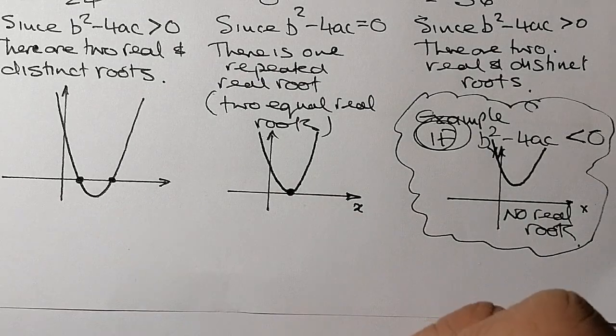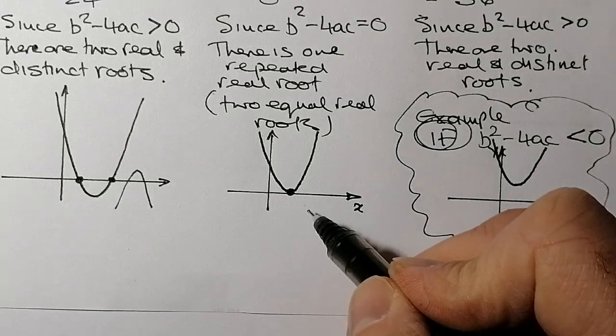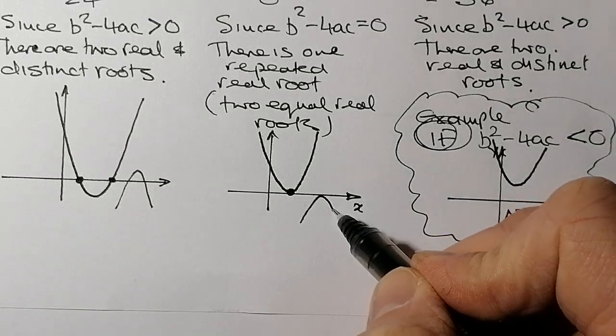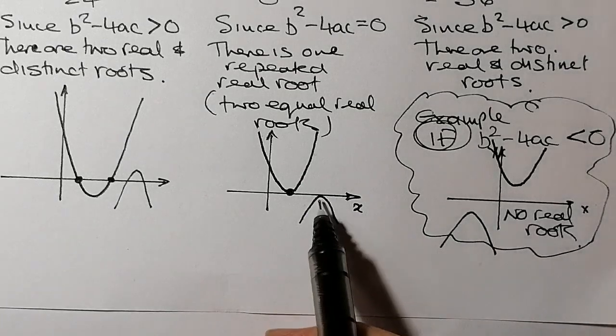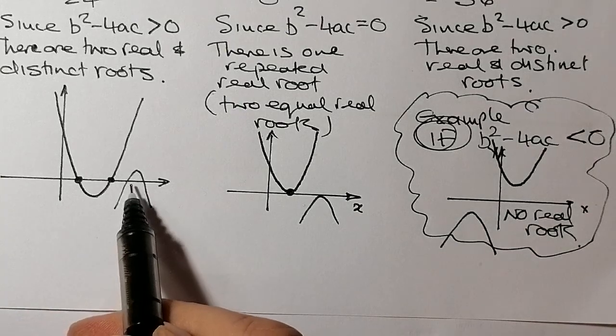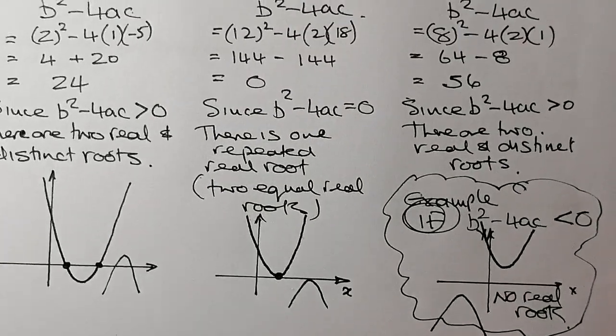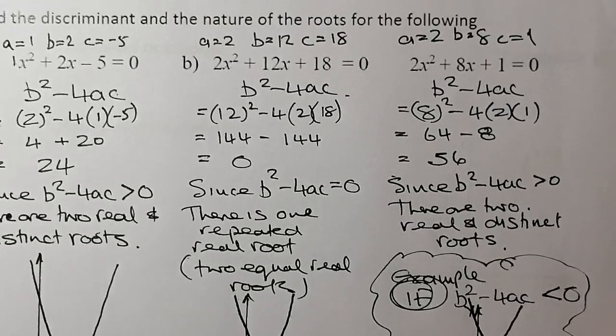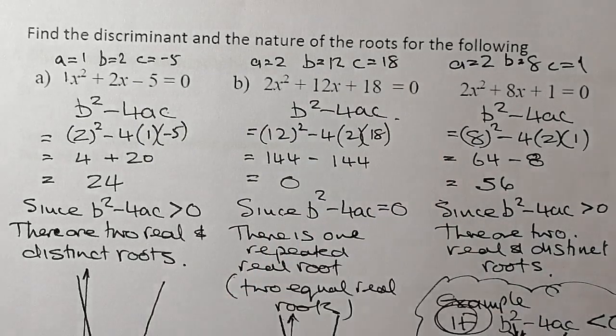Remember, these graphs here could be up and down the way as well, so it could be that way there. This one here could be this way there, just touching there. And also, this graph could be there, no real roots there. One repeated real root, and two real and distinct roots. Hopefully this has helped you a bit with the quadratic section, and this is really just the quadratic section dealing with the discriminant and the nature of roots.